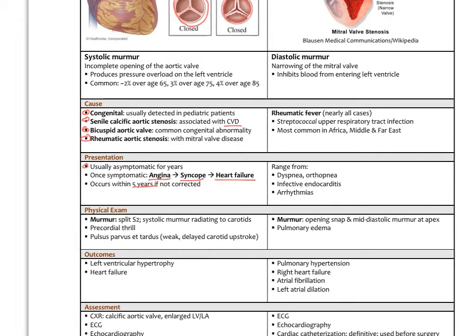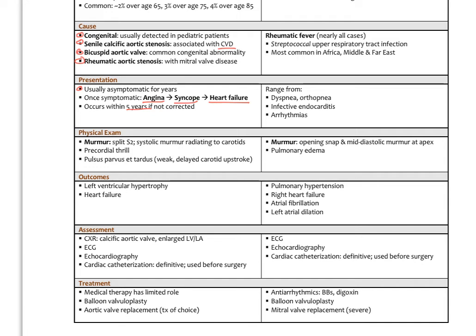On physical exam, the S2 sound will be split, as the stenosed aortic valve doesn't close at the same rate as the pulmonic valve. We'll hear a systolic murmur radiating up to the carotid arteries. We might feel the chest vibrate on systole — that's called the precordial thrill. And there's the pulsus parvus et tardus, a weak, delayed carotid upstroke pulse, indicating blood is not exiting the left ventricle adequately during systole.